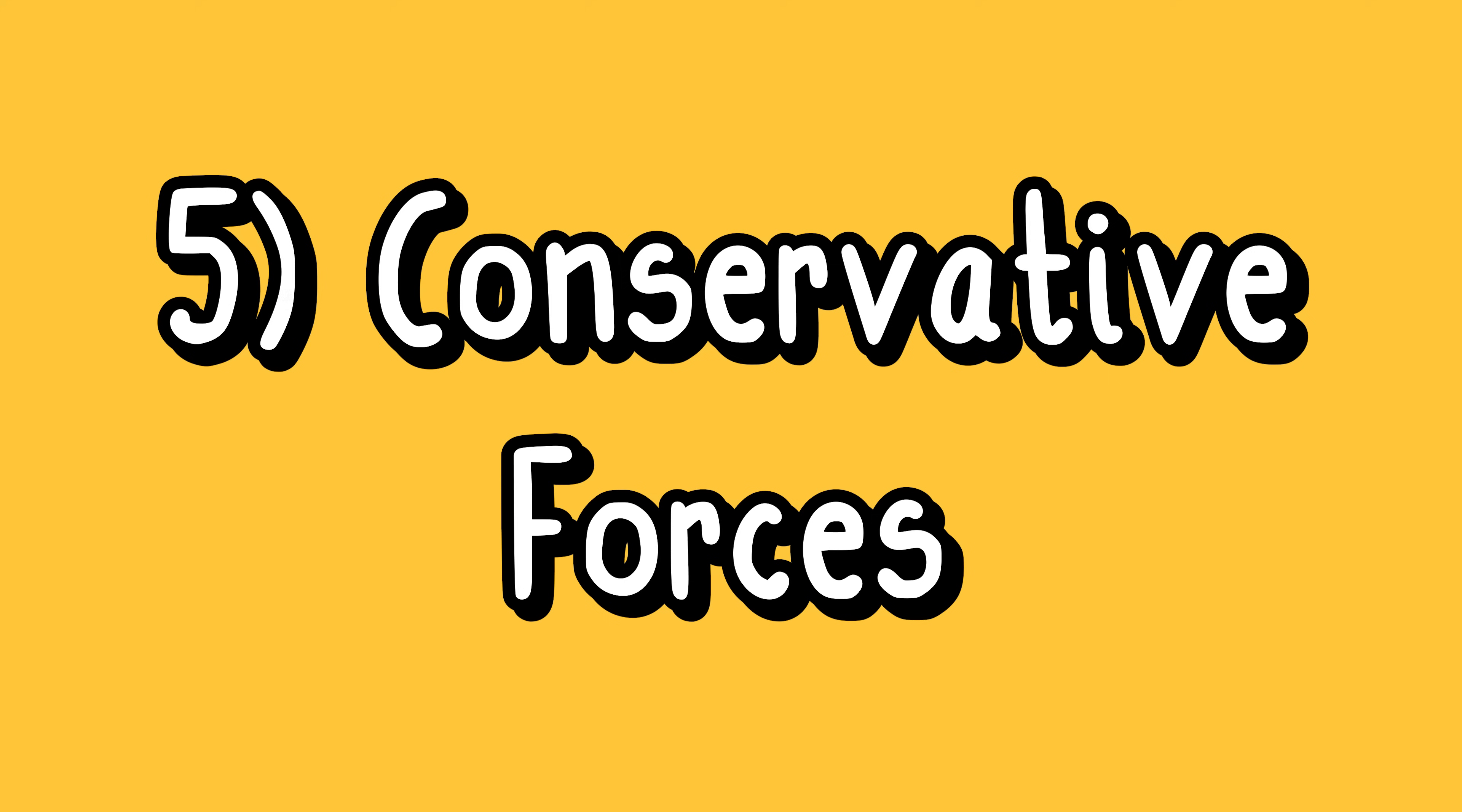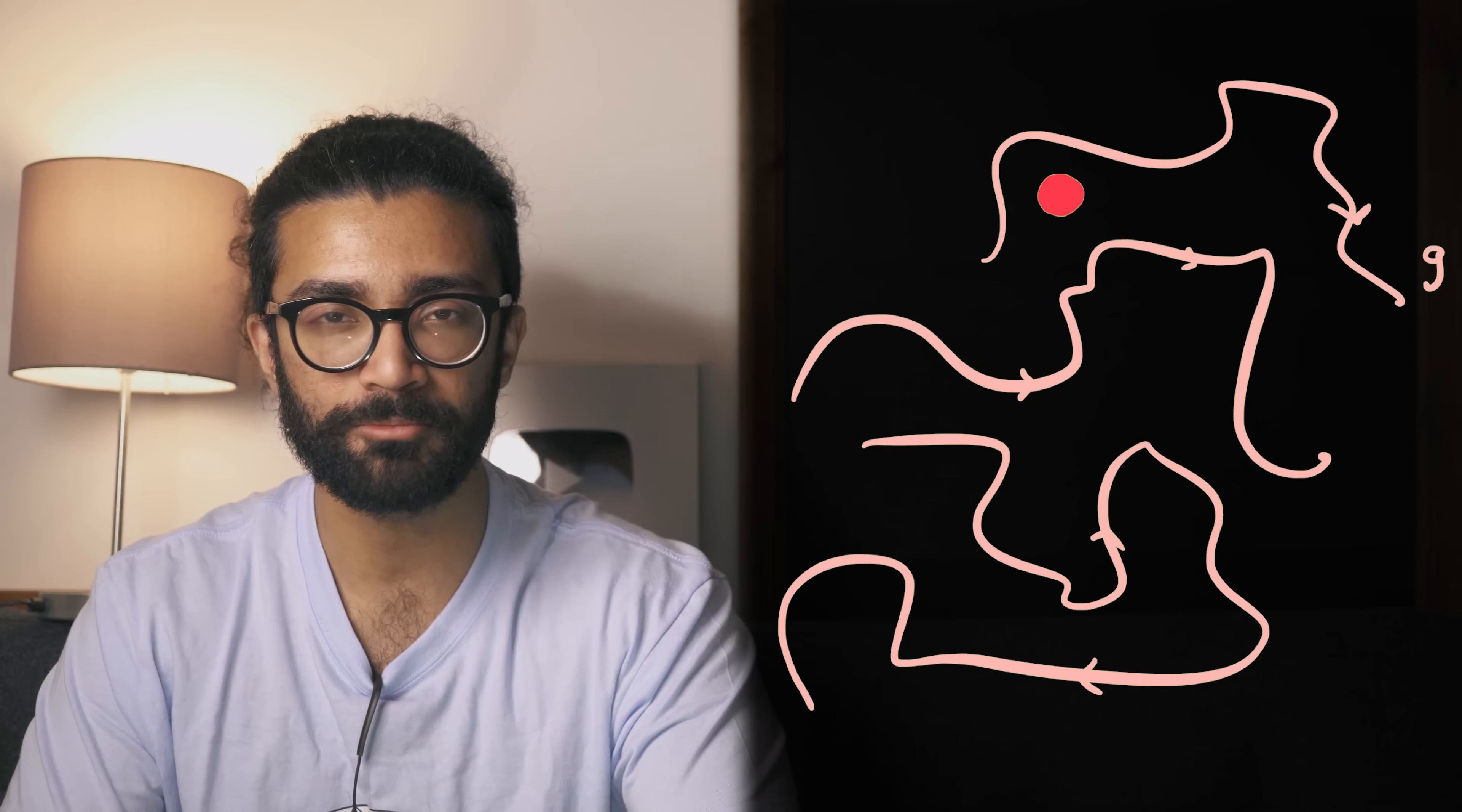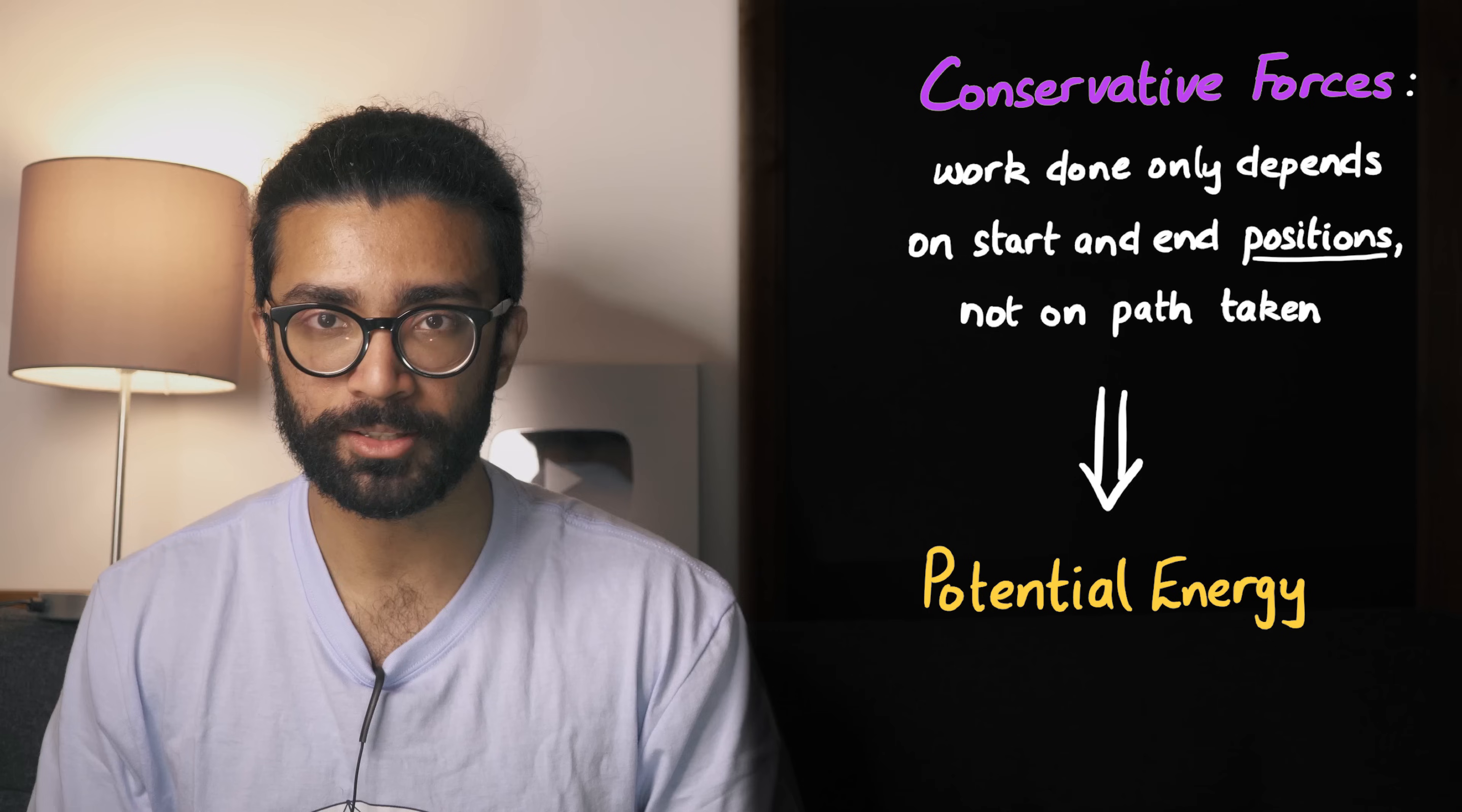level five, conservative forces. These are forces, that do work, in such a way, that this work, only depends, on the start, and end positions, of the object, in space. Now, for the ball above the earth, all we really care about, is the height, not even the exact position. But that's only because, of the amount of symmetry, in our system here. If instead, we had a really weird, gravitational field, I don't know what object, would have a gravitational field, like this, but go with me here, then the only thing, that would matter, in calculating the potential energy, would be the starting, and ending position, of our ball. And, all of the forces, for which we can define, potential energy, are indeed, conservative. Gravity, the elastic force, exerted by a spring, the electrostatic force, between charged particles, and many more.